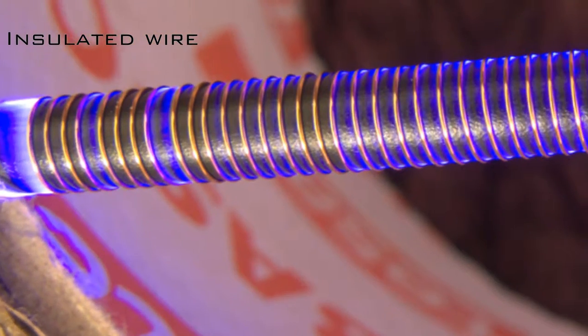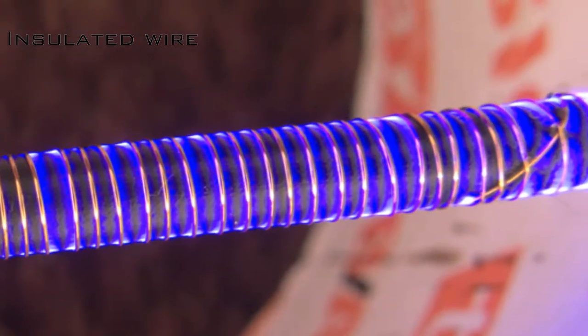As you can see, the corona is spread very evenly and it looks like glow instead of arc. Here is more contrast photo.